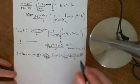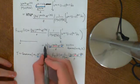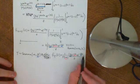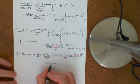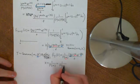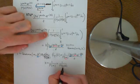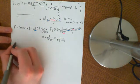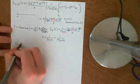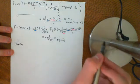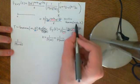So X+Y is indeed gamma distributed with parameters a+b and λ. Since this is gamma distributed, this constant must be what we need to integrate to 1. We know the normalizing constant for a gamma distribution is 1 over Γ(α), and in this case α is a+b, so it must equal 1 over Γ(a+b). Therefore the big expression we had up top must equal 1 over Γ(a+b). So we have now proven that the convolution of two independent gamma random variables Gamma(a, λ) and Gamma(b, λ) is Gamma(a+b, λ).